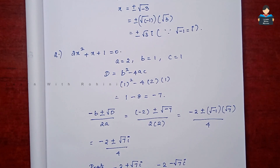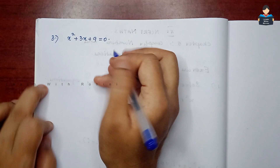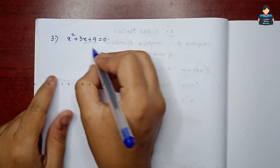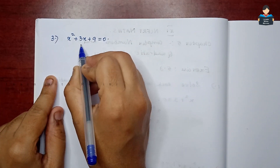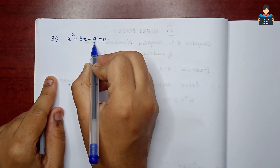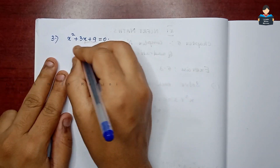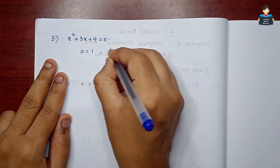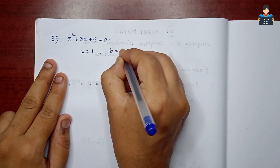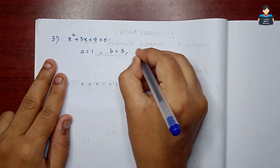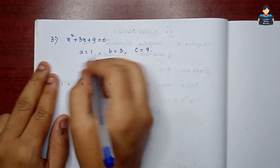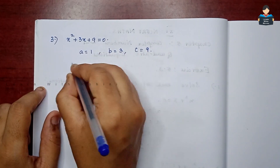Next is the third sum: x² + 3x + 9 = 0. Here a = 1, b = 3, and c = 9. We first find the determinant D.